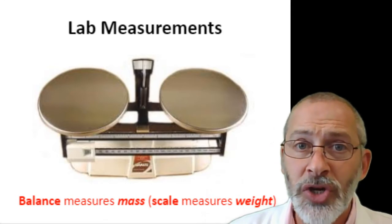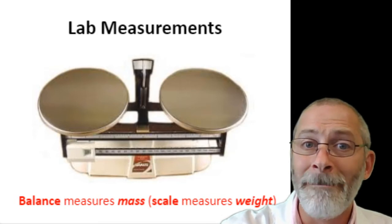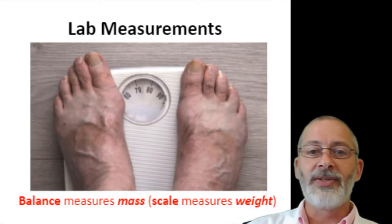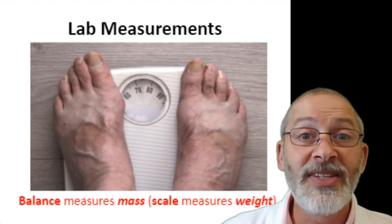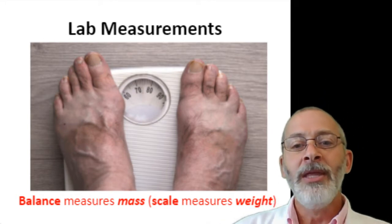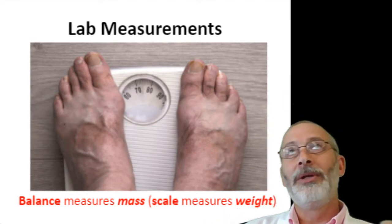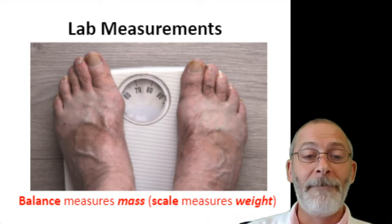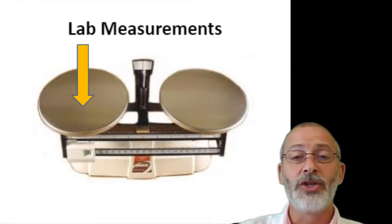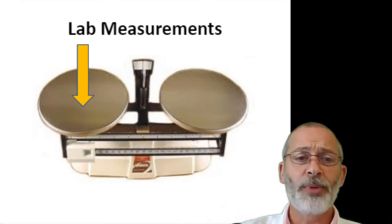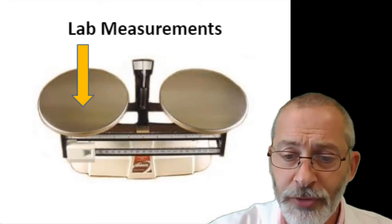As far as science this year is concerned, scales aren't going to be the right tool for many of the labs we're doing because we're going to want to measure mass. Here is an example of a bathroom scale — you stand on a scale to measure your weight. We don't normally stand on a balance, but a balance is used to measure mass. When we use double pan balances, we always place the object on the left-hand side. I'll show that to you in just a few minutes.